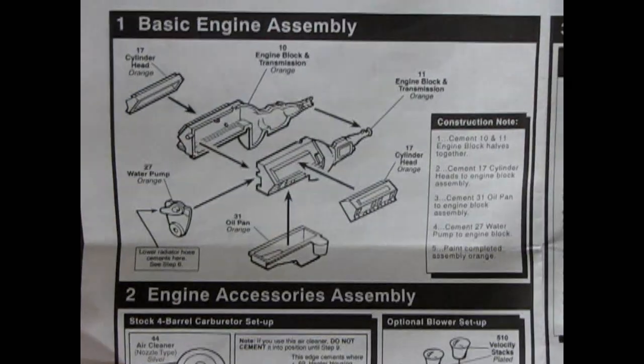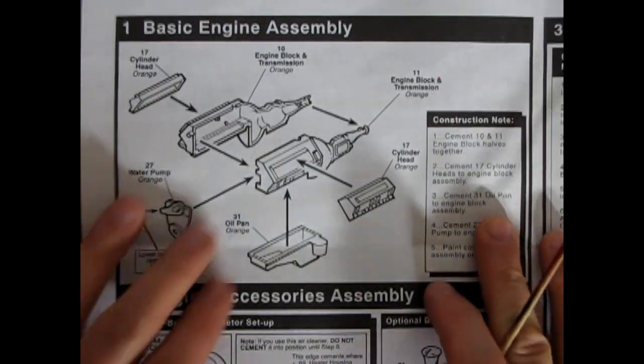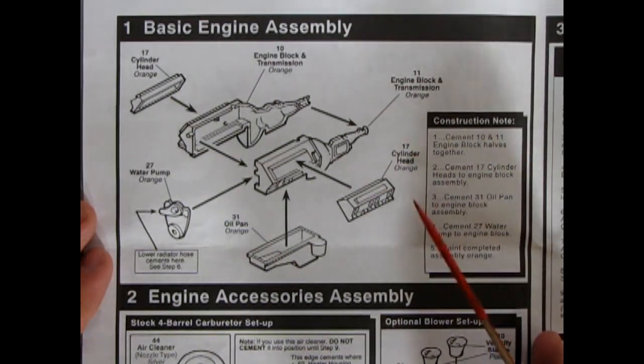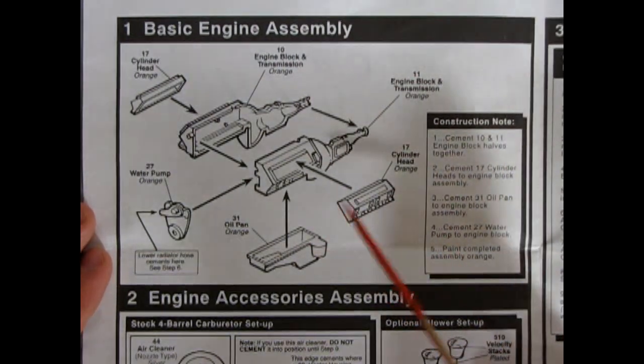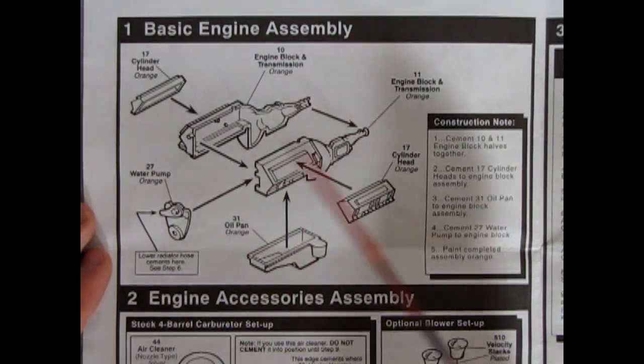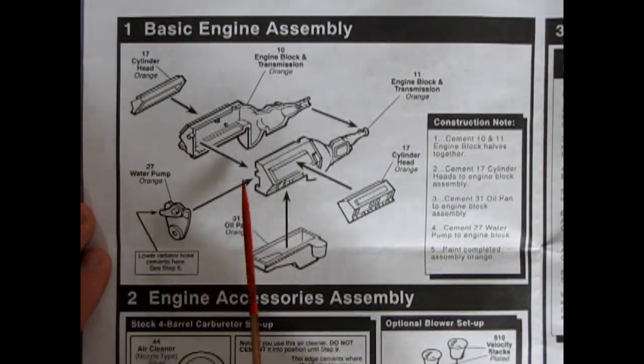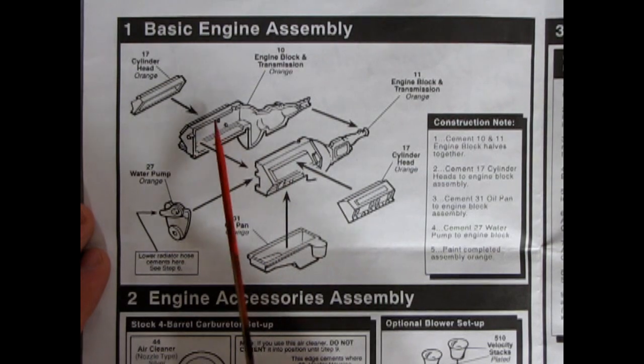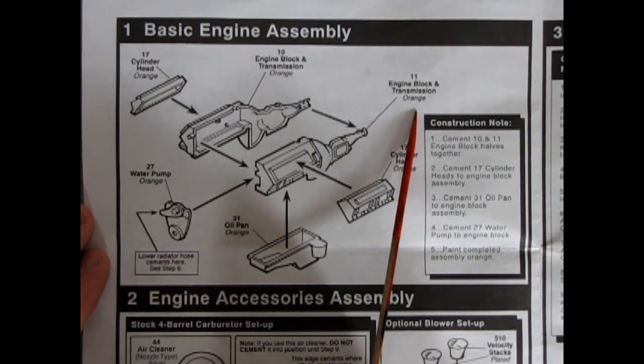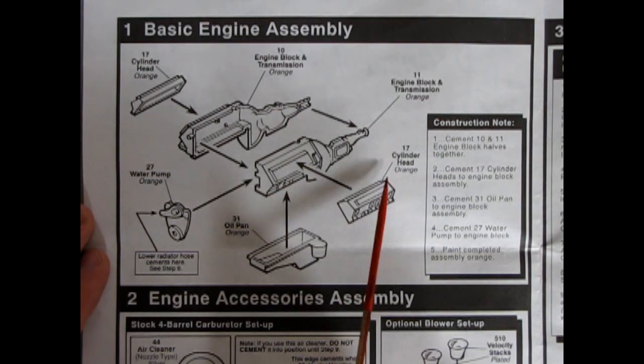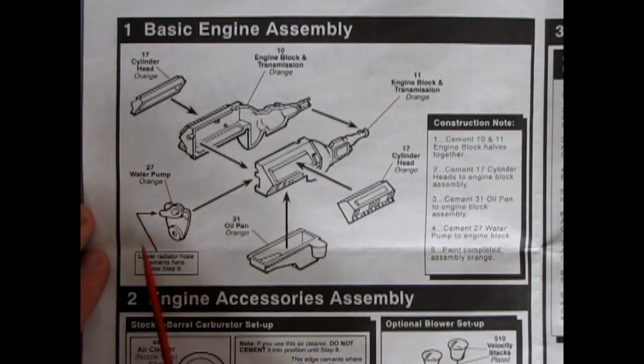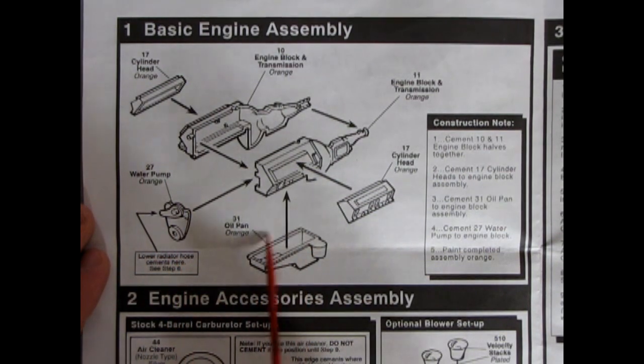Now this model kit, I'm not too sure if this is actually a full-on retooling effort from AMT at the time or if it was just an improvement to an already existing tool from the earlier 70s. However, here's our engine block going together and of course it's two pieces with the transmission and block molded together. It does tell you to paint these orange which would be your Chevrolet engine orange.